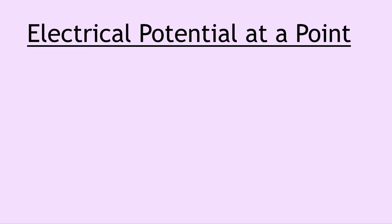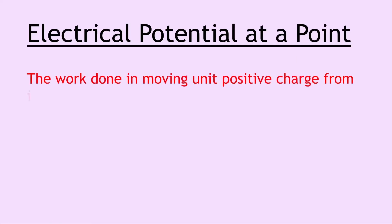Moving on we have the term electrical potential at a point. Electrical potential can also be called electrostatic potential. This is the work done in moving unit positive charge from infinity to that point. You might notice that this is very similar to the definition for gravitational potential at a point in space, which was seen in the key definitions video for the astrophysics topic. This is talking about a work done, so that's in energy, and moving unit positive charge, so that's a coulomb, from infinity to the point that you're talking about.